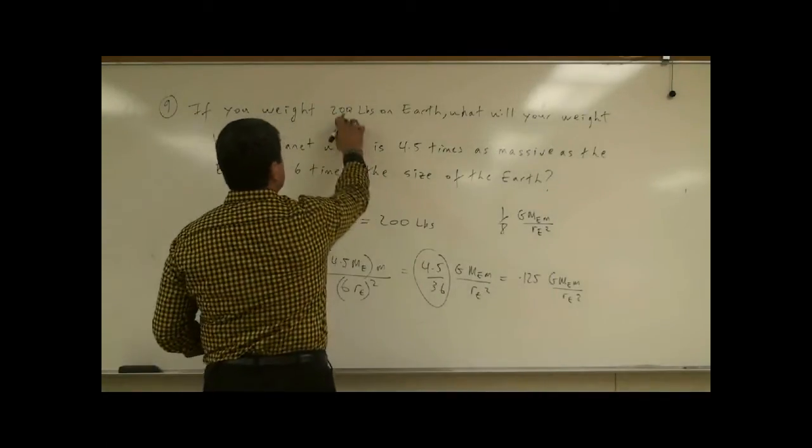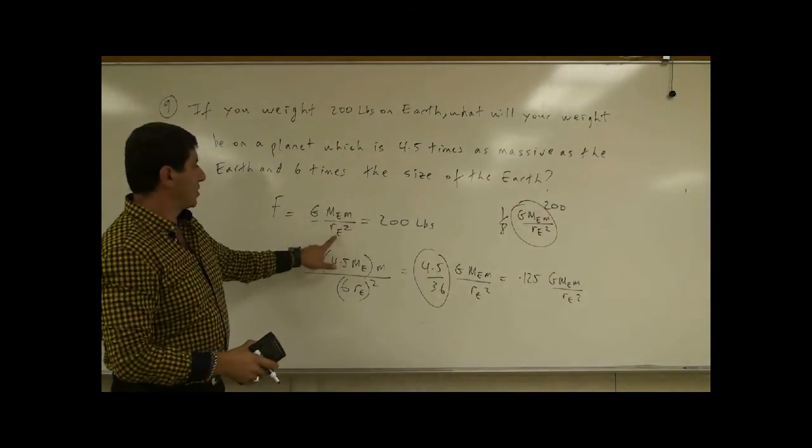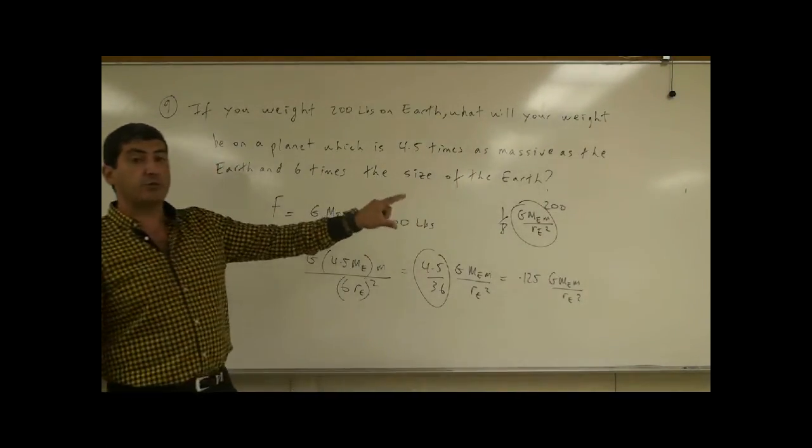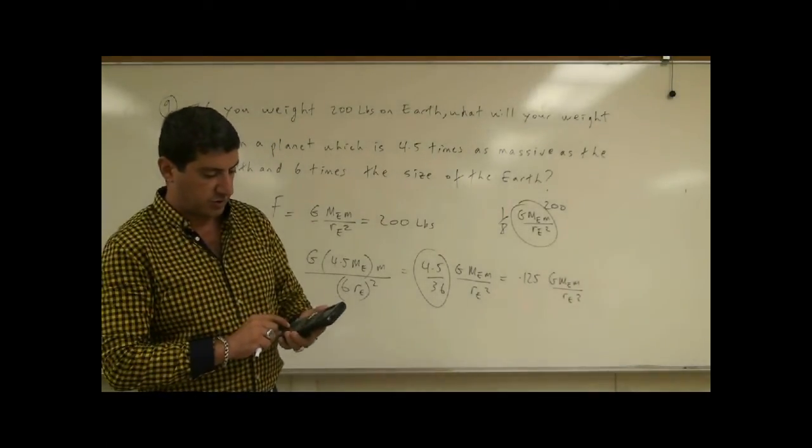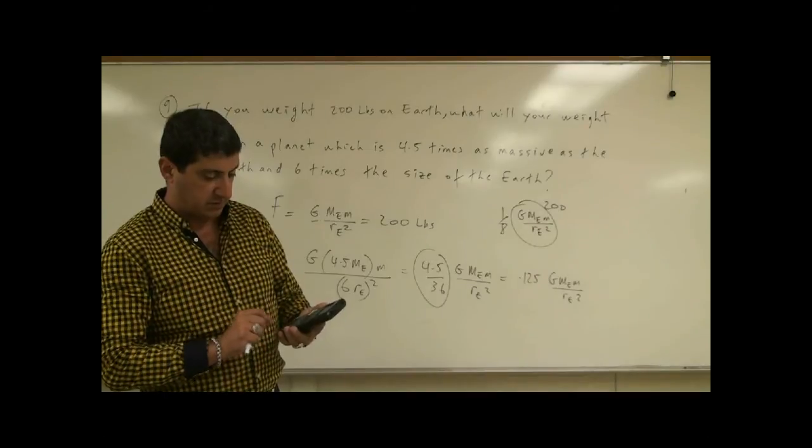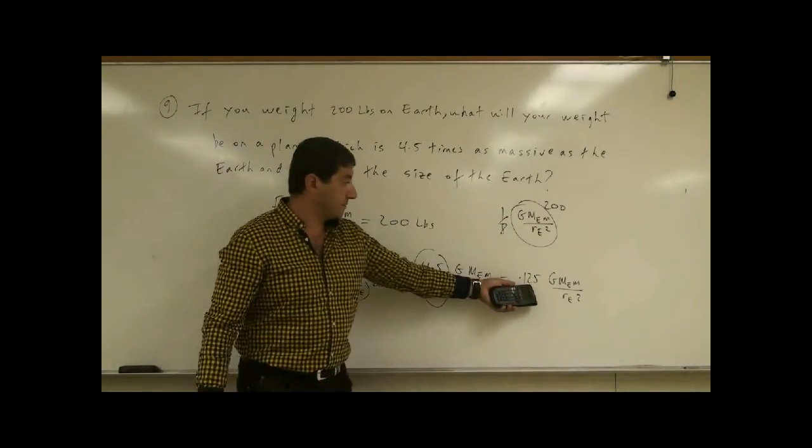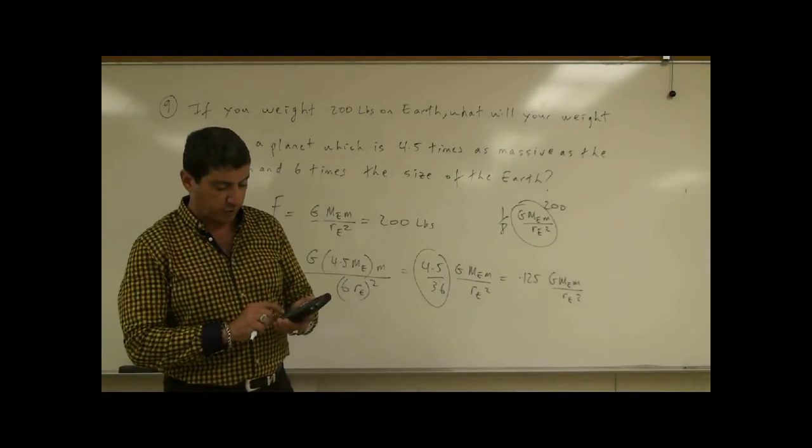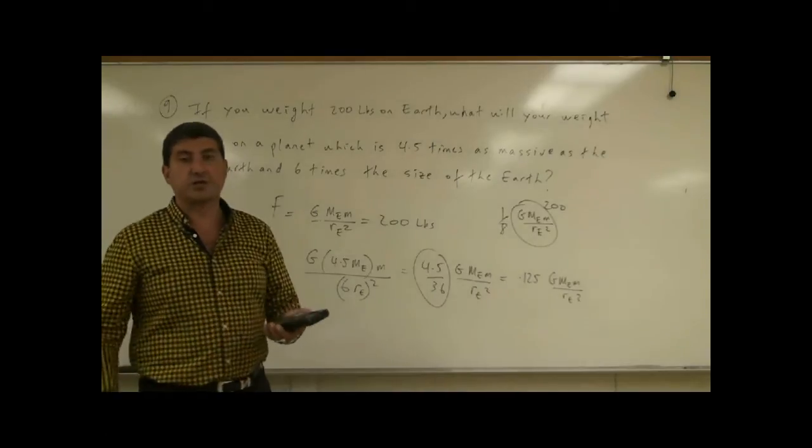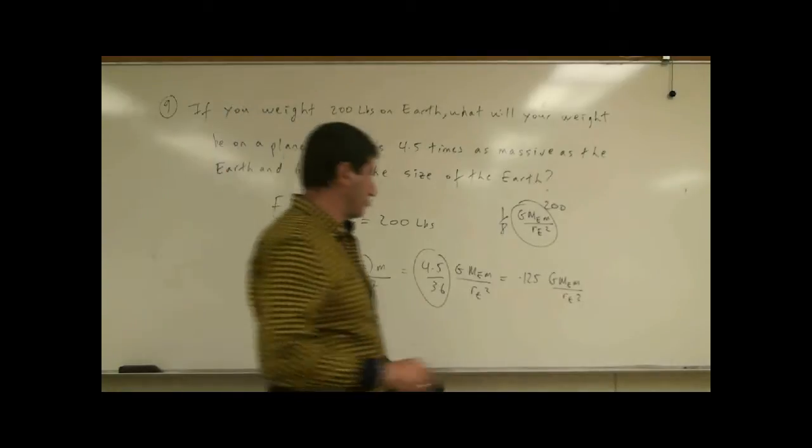So if they weigh 200 pounds, that's this whole thing is 200. G M M over R_E squared, that's 200. So if they weigh eight times less, you take 200, you divide it by 8. 200 divided by 8. Or you could just say 200 times the decimal, 0.125. Well, either dividing by 8 or multiplying by the decimal is the same thing. So you get 25 pounds.